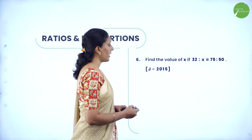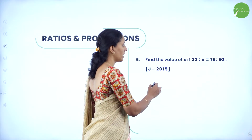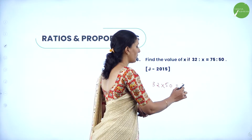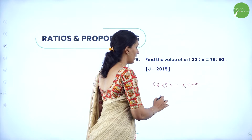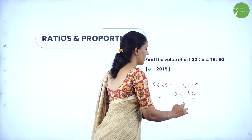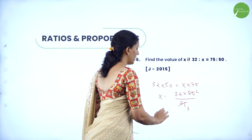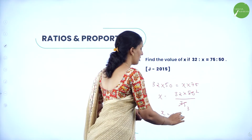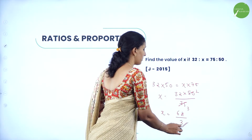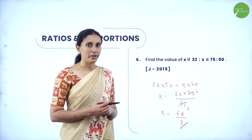Next: find the value of x in 32 is to x equals 75 is to 50. We can write this as 32 × 50 = x × 75. So x = (32 × 50) / 75 = 1600/75 = 64/3. So x equals 64 by 3.